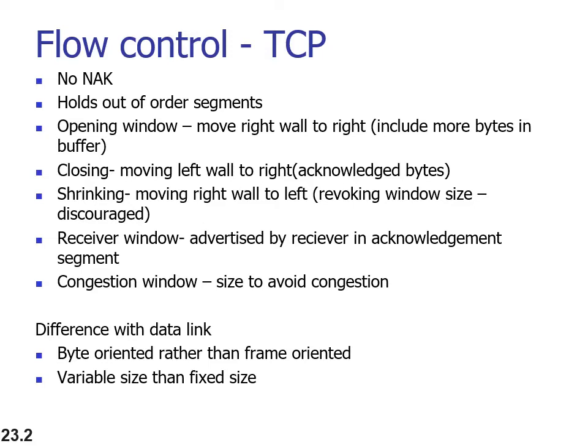In the data link layer, flow control and error control is done across the links, whereas in the transport layer it is done between the end systems. Even if we ensure flow control and error control on every link, we need it again at the transport layer because data link layer handles issues arising from media problems such as collision.